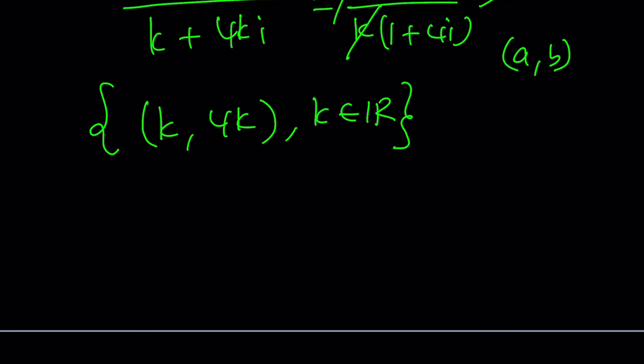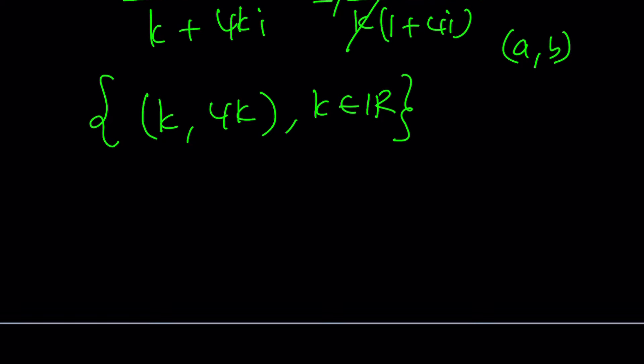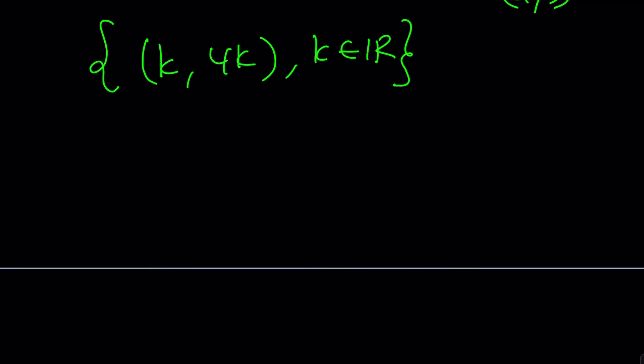But if you wanted to write the B comma A ordered pairs, then it's just going to be the other way around. But you have to specify what you're writing. So in other words,